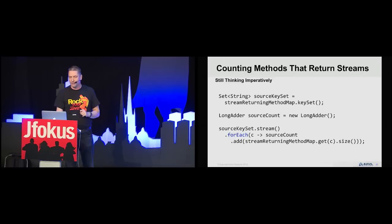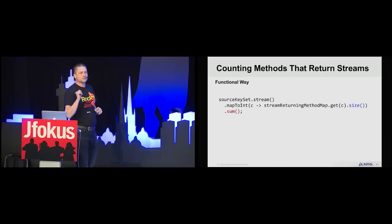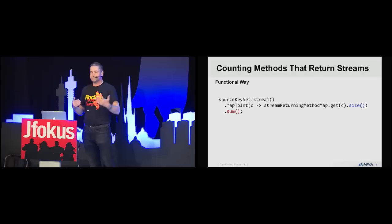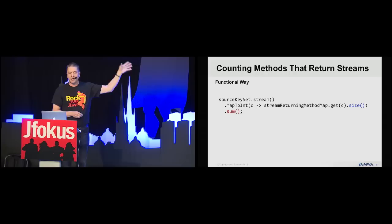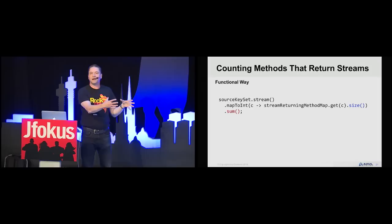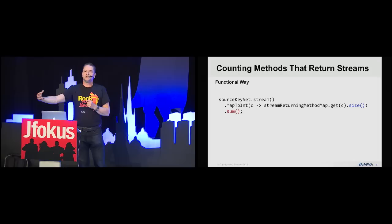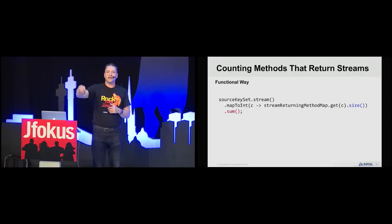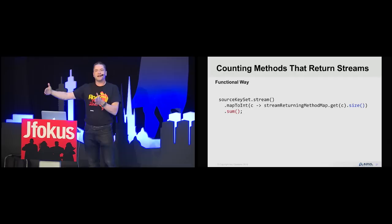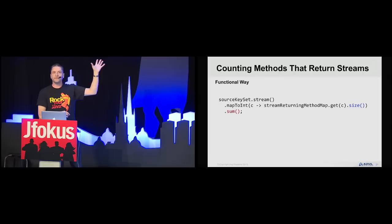The functional way to do it is like this: rather than having a variable, even a LongAdder, what we do is take the stream and use mapToInt to map from each class in the hash table to the number of methods associated with it. That gives a stream of integer values — the counts for each class — which we pass into sum. That adds them all up and gives a single result. Now we have a pure, functional way of doing this.